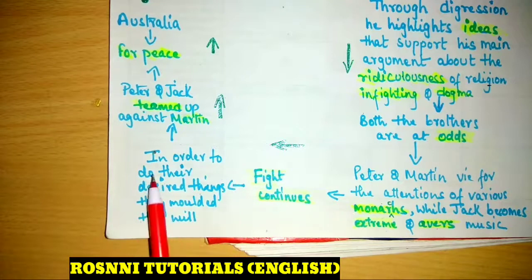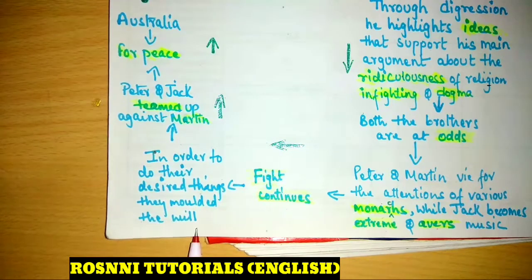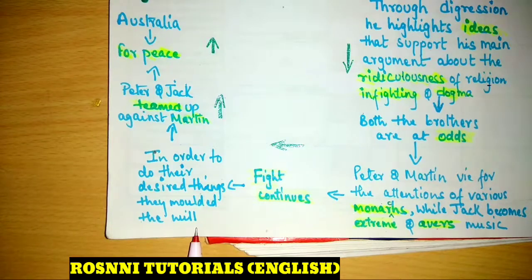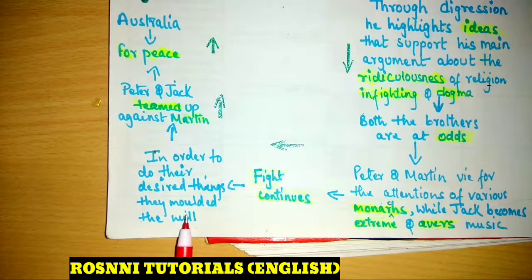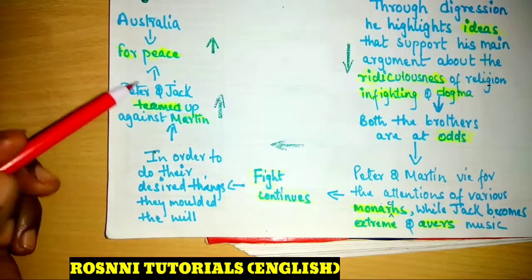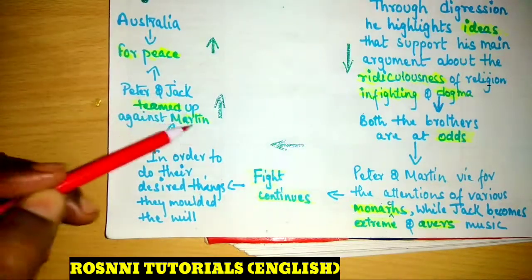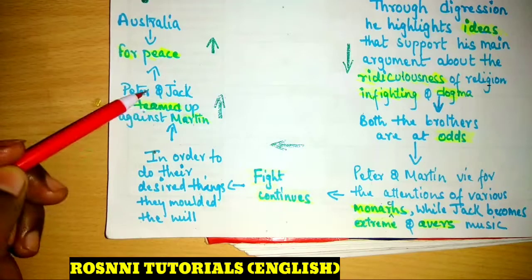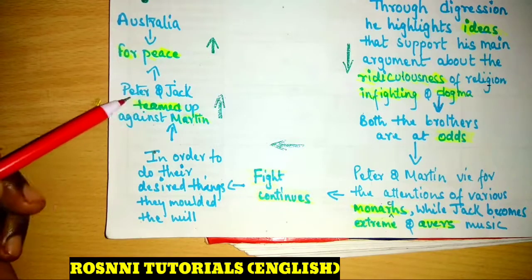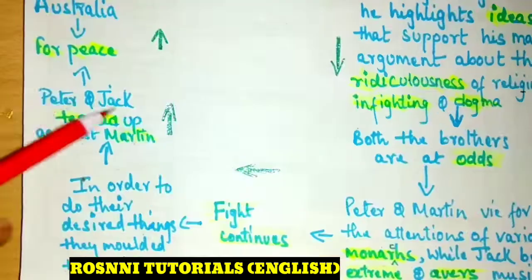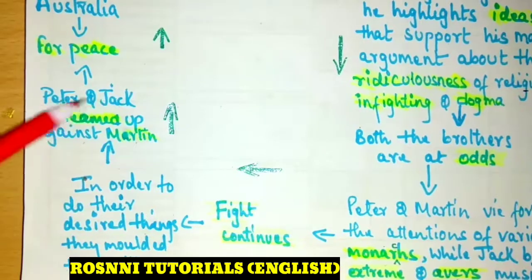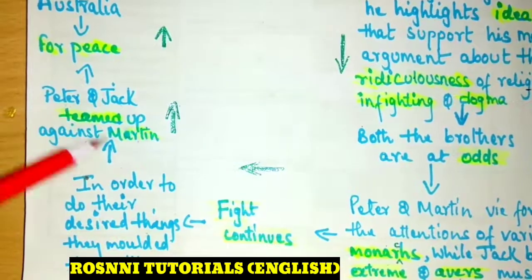In order to do their desired things, they molded the will — which, as mentioned, represents the preachings of the Bible. The teachings of the Bible were altered by these three brothers according to their own requirements. Then we see Peter and Jack start working against Martin.